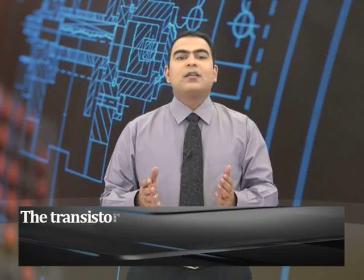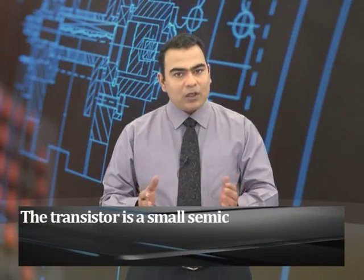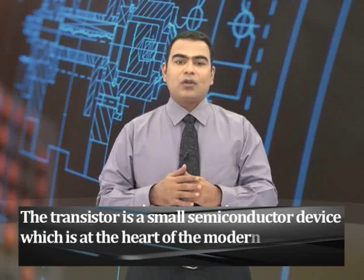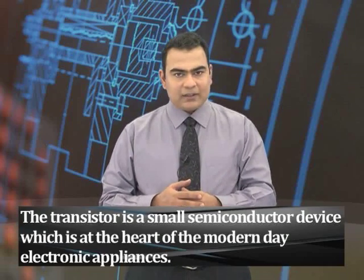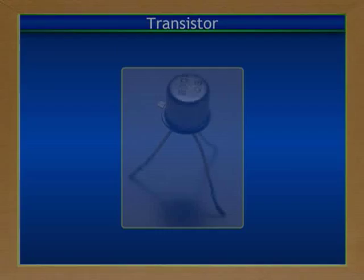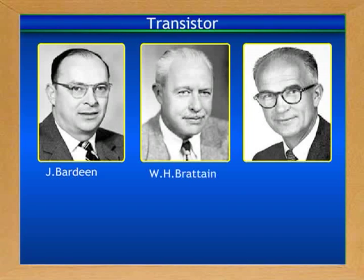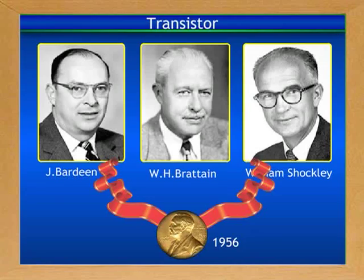The transistor is a small semiconductor device which is at the heart of modern-day electronic appliances. The transistor was invented in 1948 by John Bardeen, W. H. Brattain, and William Shockley, who shared the 1956 Nobel Prize in Physics.